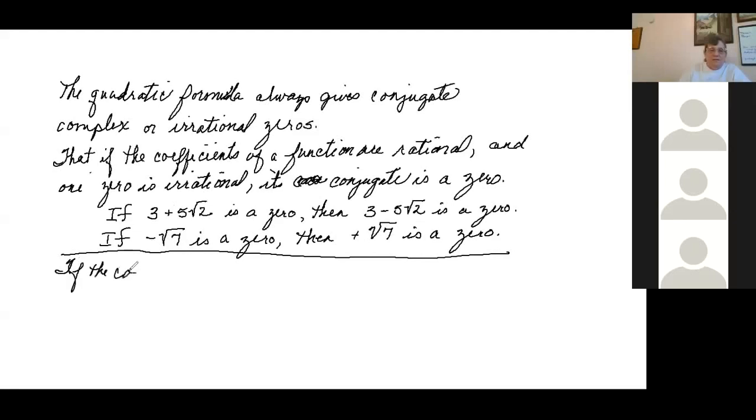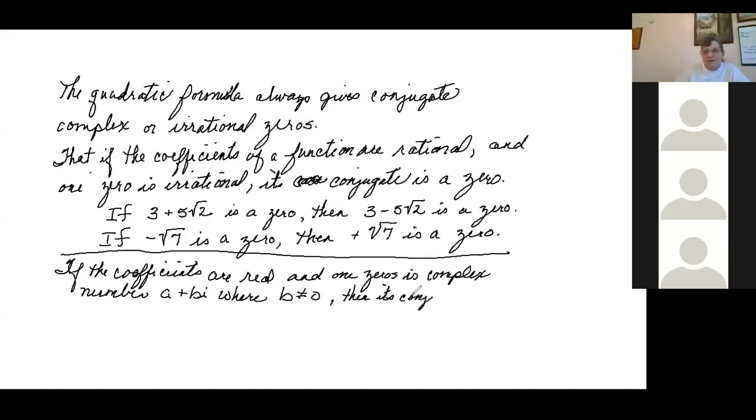It says if the coefficients are real, meaning they don't have an i in them, and one of the zeros is a complex number a plus bi where b is not equal to zero—they have to put this in because all numbers are complex numbers, it's just that the real numbers are complex numbers where b is zero and you don't have the i term in it. So this just covers this. It's going to be like three plus five i. So if three plus five i is a zero, then once again, its conjugate is also a zero.